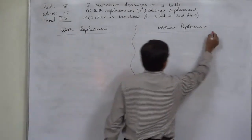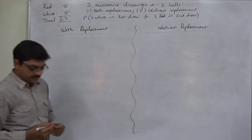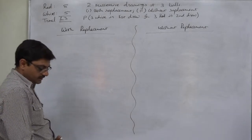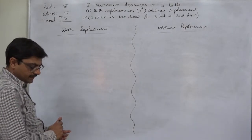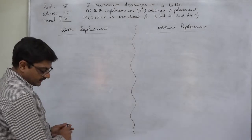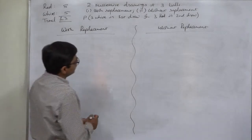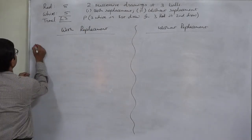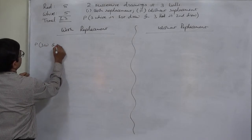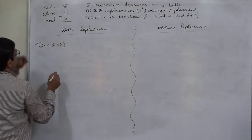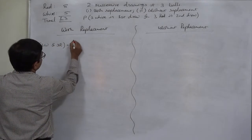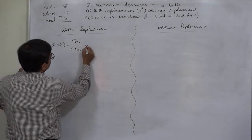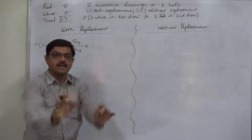Let us calculate the probability under the scenario of with replacement. Three balls are drawn out of 13, so we need 13C3, which gives us 286. In the first draw we expect three white balls, and in the second draw three red balls. Three white balls out of five is 5C3, over total 13C3.